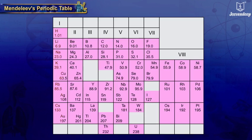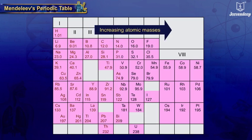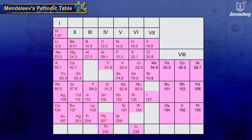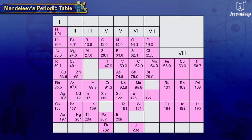He arranged all the known elements in the increasing order of their atomic masses in horizontal rows, and placed the element which exhibited properties similar to the first element below it, thus starting the second row of elements. He could arrange all 63 known elements according to their properties.